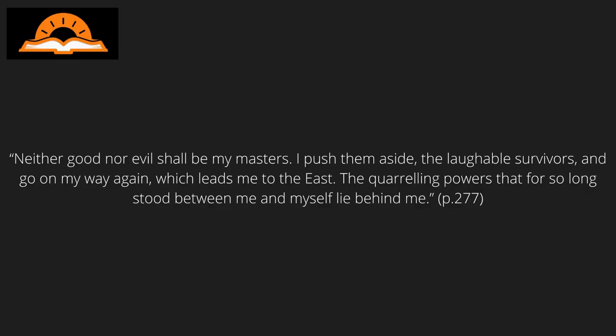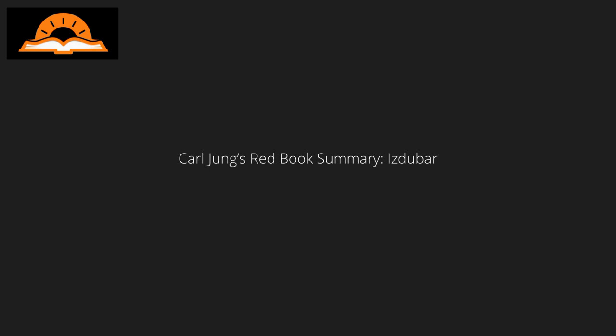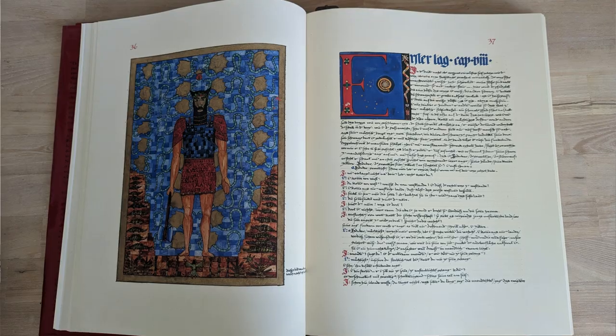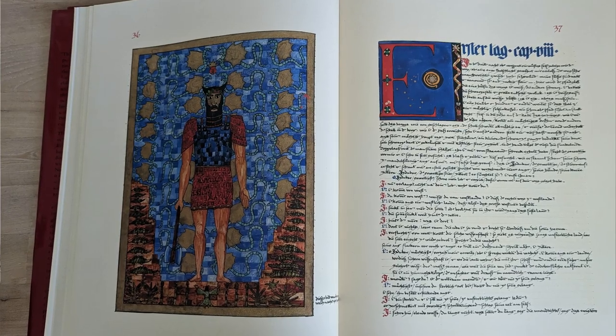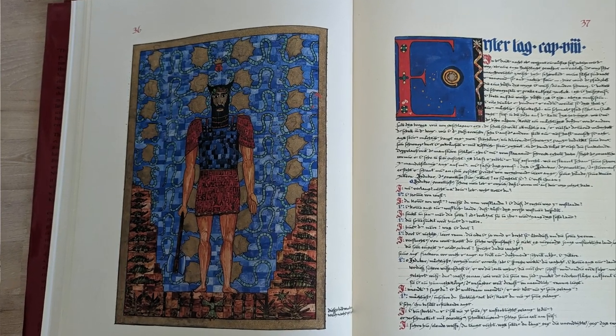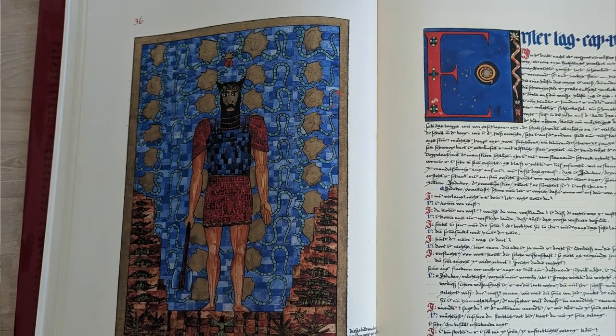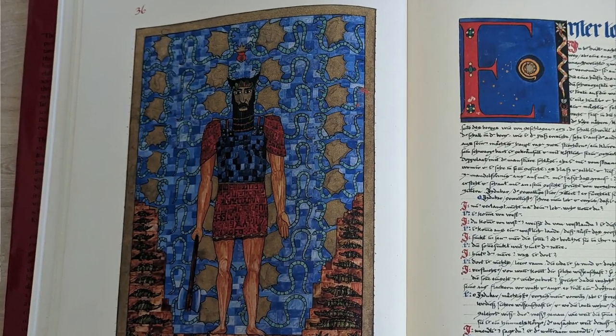After rejecting his ideals, Jung continued on his way, now taking him to the East. 'Neither good nor evil shall be my masters. The quarreling powers that for so long stood between me and the self lie behind me.' In another fantasy, while on his journey to the East, Jung comes across a giant called Izdobar, who is heading in the opposite direction — from East to West. And although Izdobar is a powerful giant and Jung is at first afraid of him, it turns out that Jung is more dangerous to Izdobar than Izdobar to Jung.